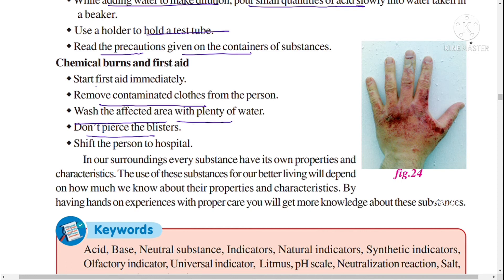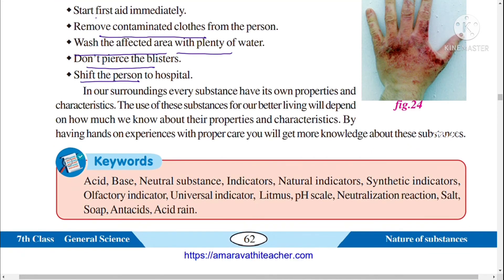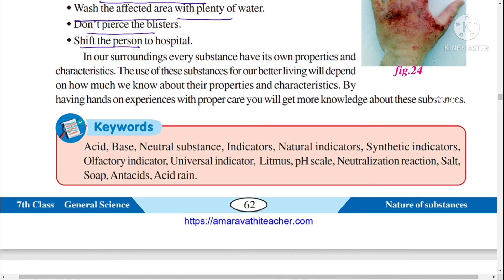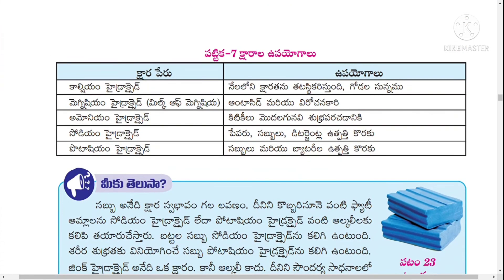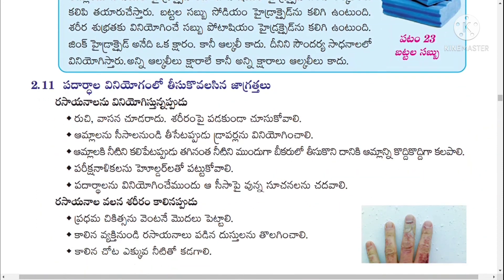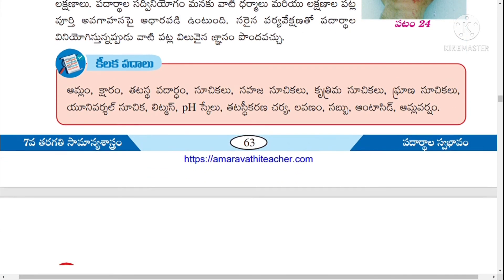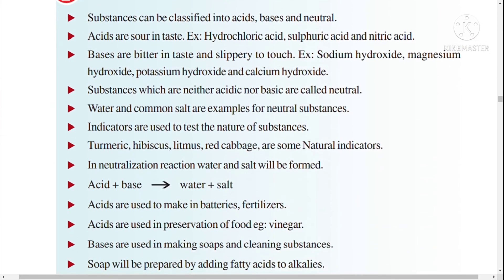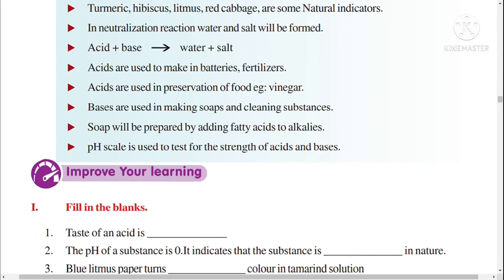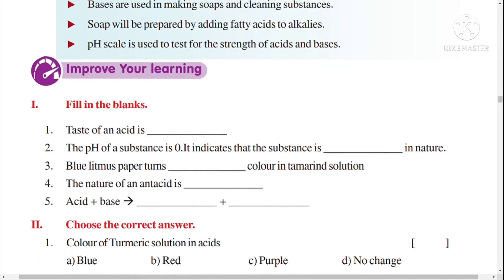For chemical burns, start first aid immediately. Remove contaminated clothes from the person, wash the affected area with plenty of water, and do not pierce any blisters. Shift the person to a hospital. Every substance in our surroundings has its own properties and characteristics, and through hands-on experience with proper care, we can gain more knowledge about these substances, including acids and bases.